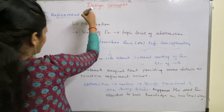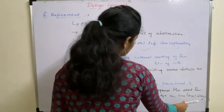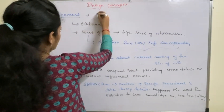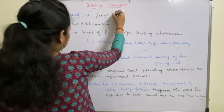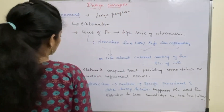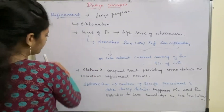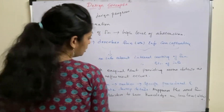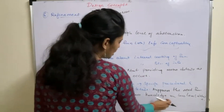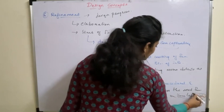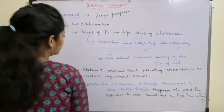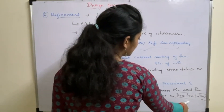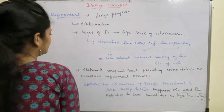Abstraction won't provide outsiders any information regarding low level details. Whereas coming to refinement, it allows the users to access low level details — it provides low level details to the users as design progresses. So the main difference: abstraction suppresses low level details from outsiders, whereas refinement provides information regarding low level details as the design progresses.